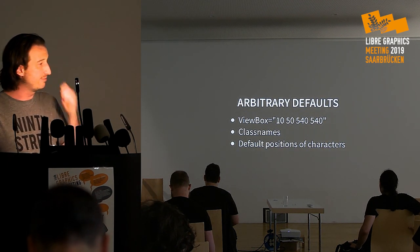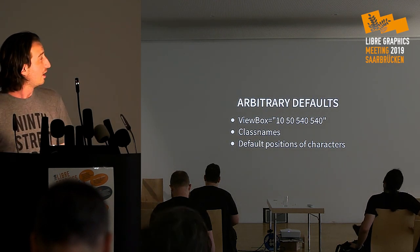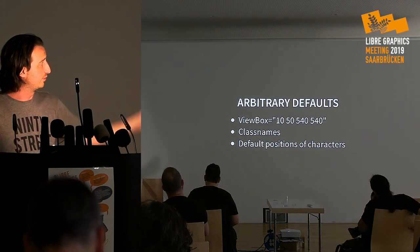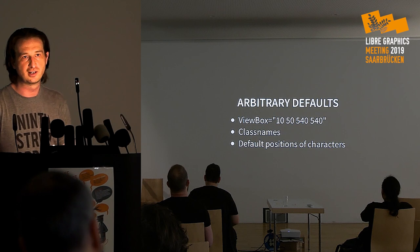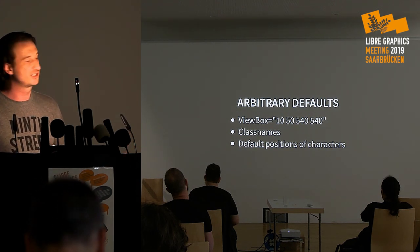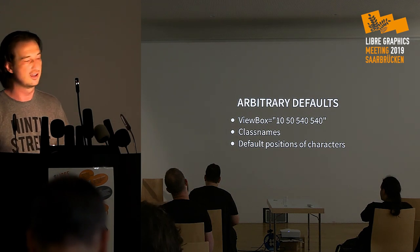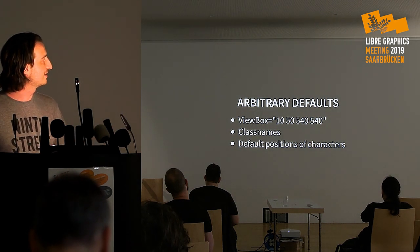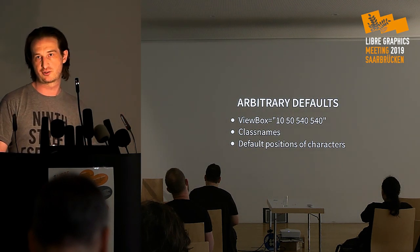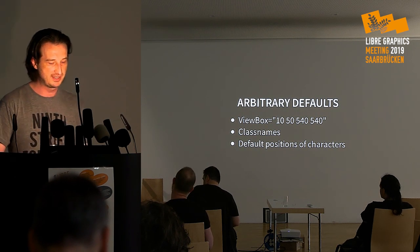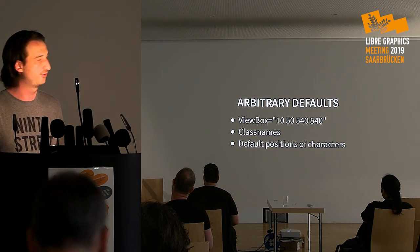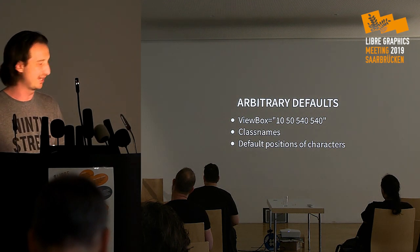When I started, I had to make some arbitrary default decisions. For example, I have a random viewbox — if I was starting over, I'd use something more standard like 0 0 1000 1000. Same with class names, which actually work out well. One arbitrary default was character position: the male is pretty basic, but the female has one leg up and an arm raised. If I were to redo it, I'd choose something more front-facing, but I made those decisions early on and now I'm stuck with them.